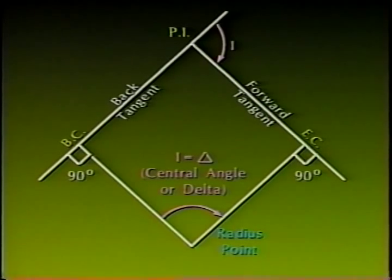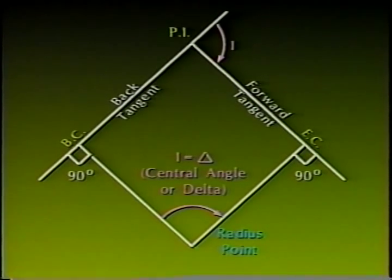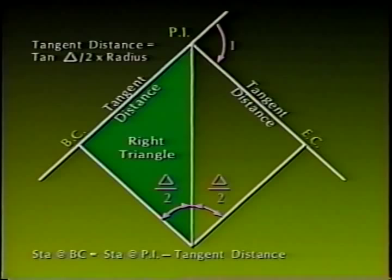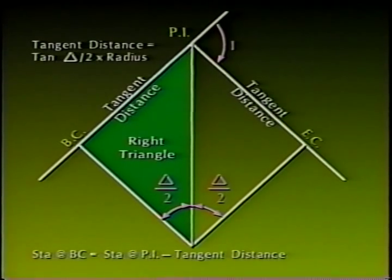The second definition of degree of curve is by chord definition, most often used by railroads, defined as the central angle subtended by a curve with a chord 100 feet long. Degree of curve by chord definition converts to radius using: R = 50 divided by the sine of one-half the degree of curve. Although degree of curve and radius are mathematically related, the radius definition is more prevalent in modern survey practice and will be used in the example calculations for the rest of this presentation.